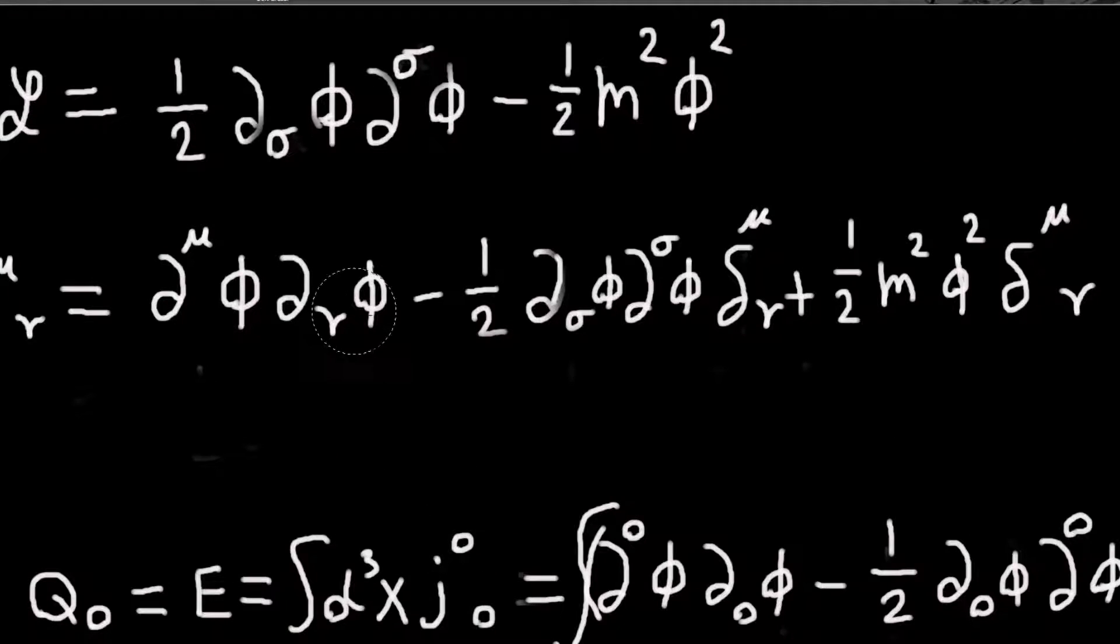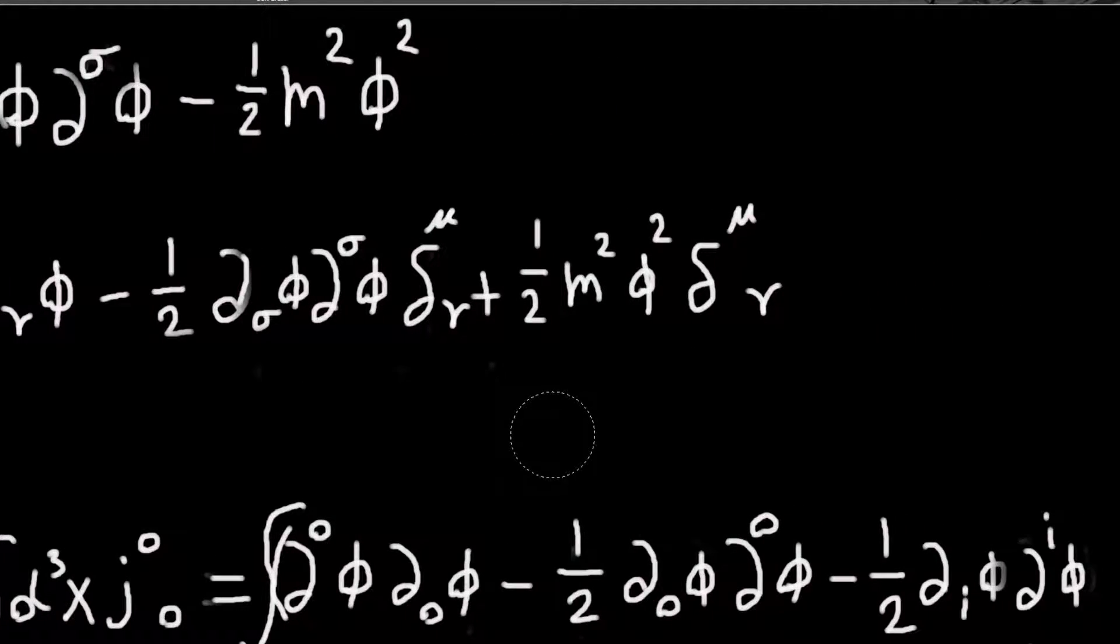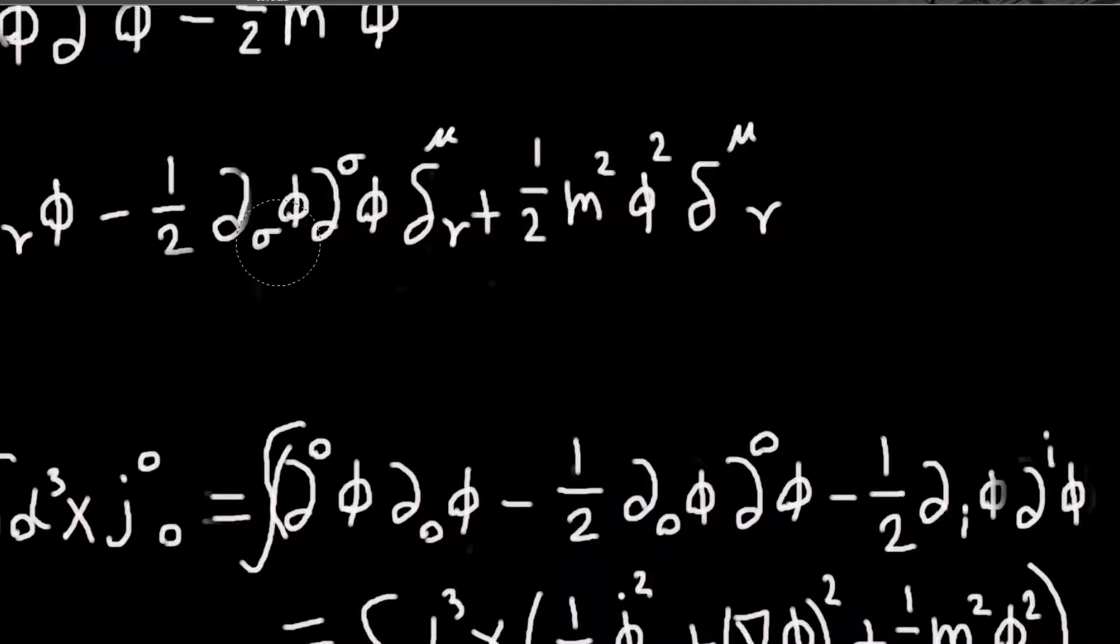So if I just plug in zero for mu and nu here, we'll get d zero d zero phi. And I will get... So I need to, I can write out, I can, the sum, like I did before for one of the other videos, split it into the time and space components.